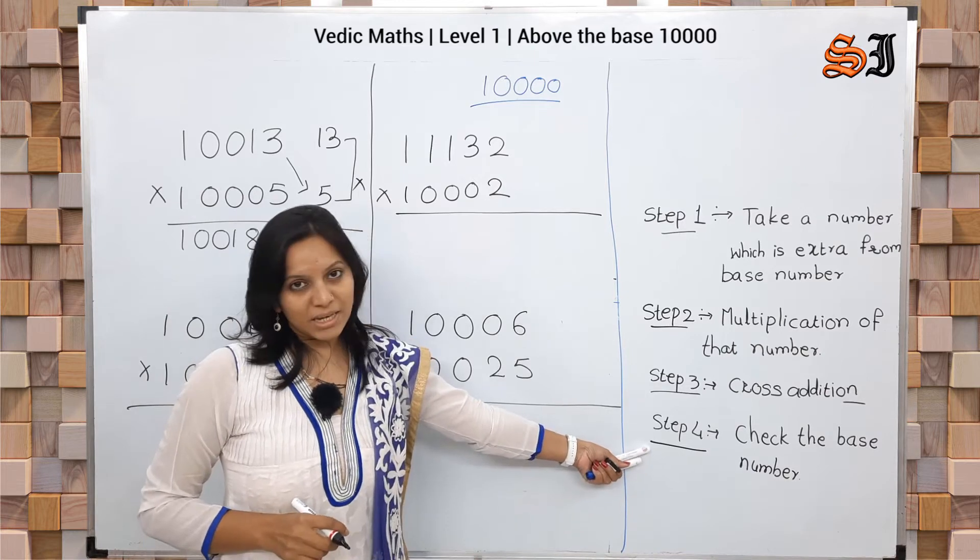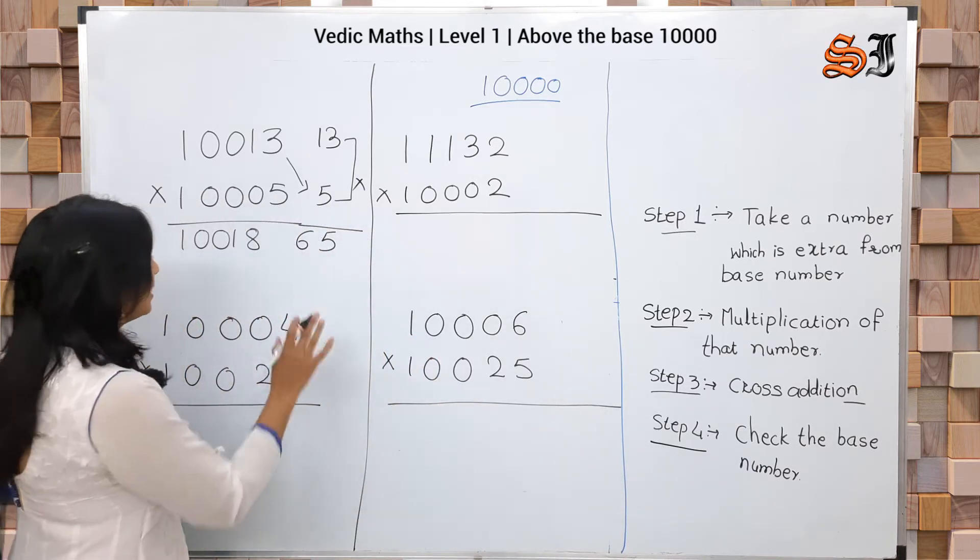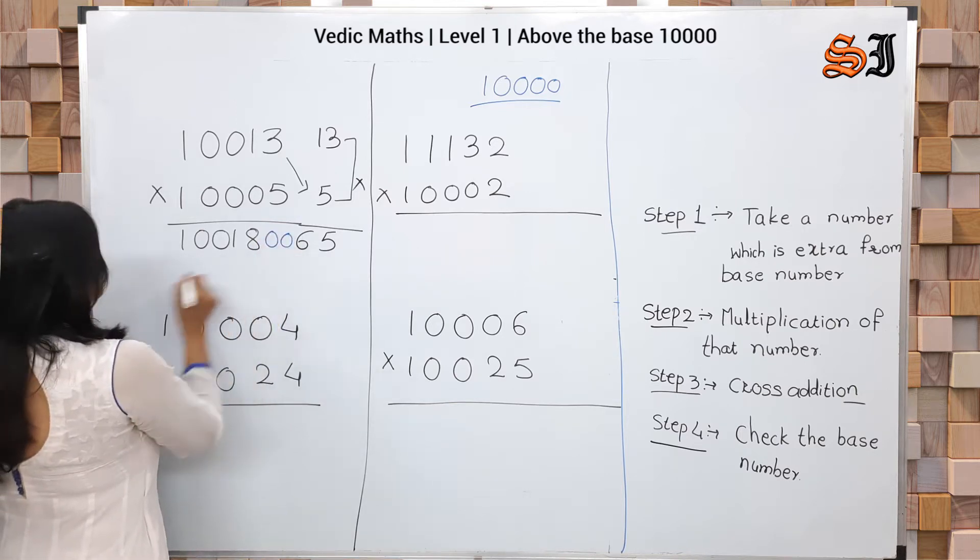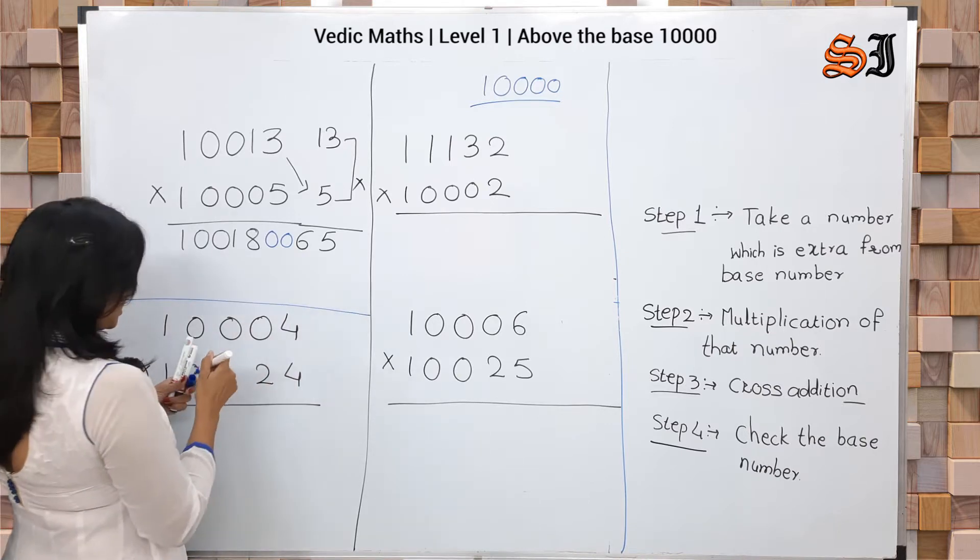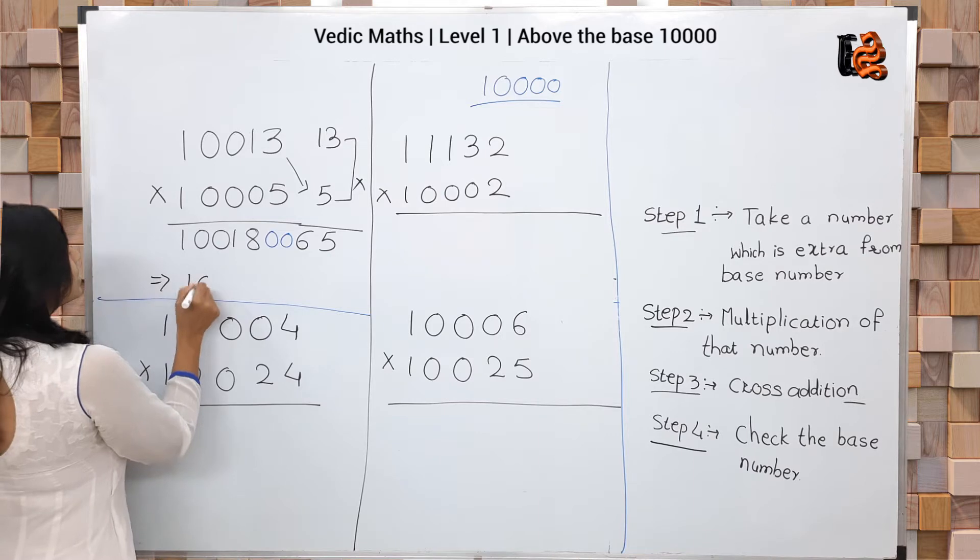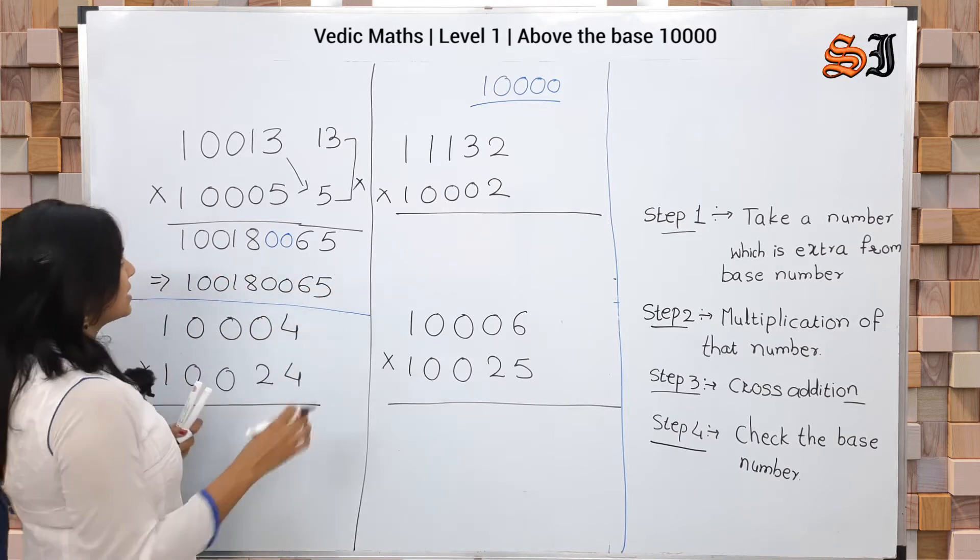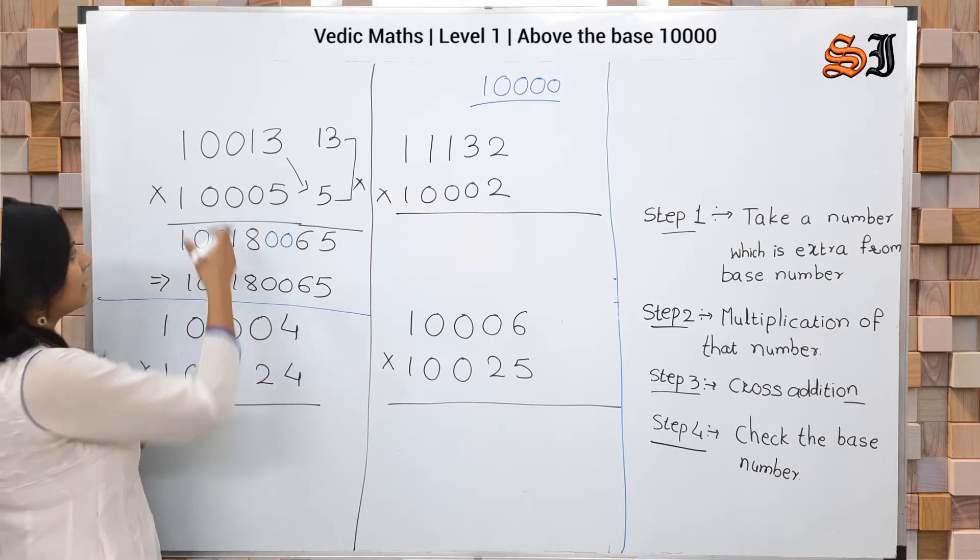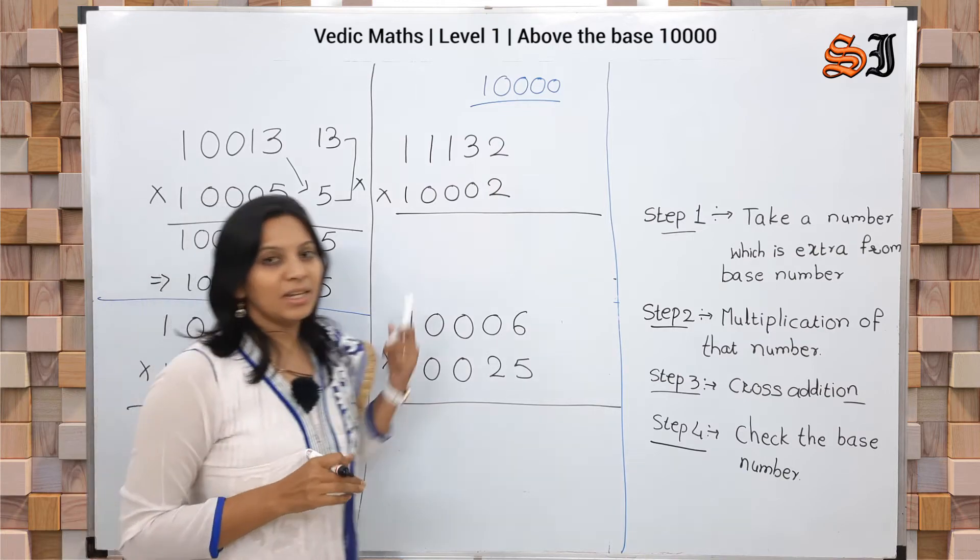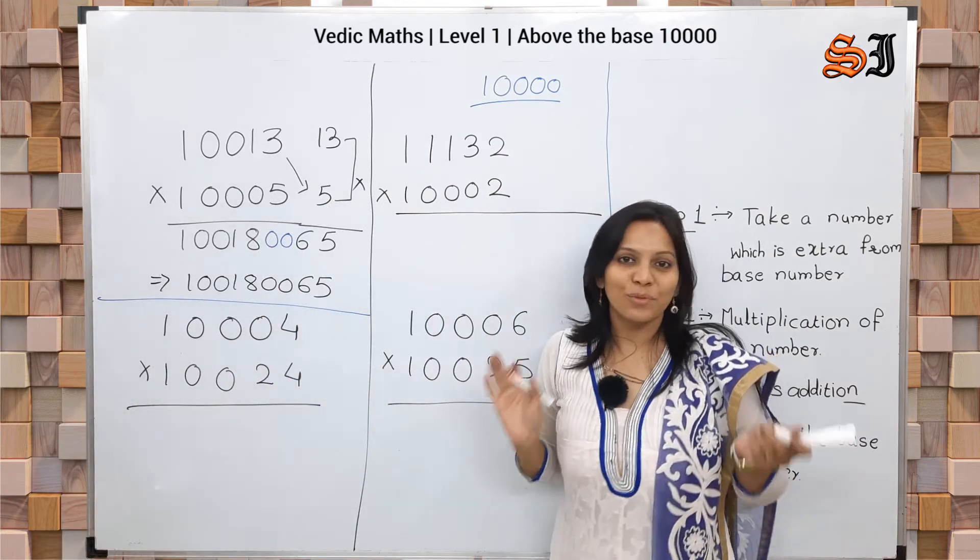Last step is multiplication. Take the extra numbers - 13 and 5 - and multiply them to get 65. The answer is 1001800065. This is done in one step, not like normal multiplication. This is the magic of Vedic Mathematics.